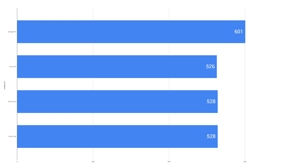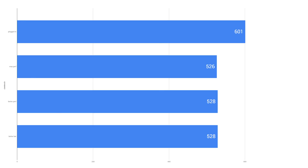In Cinebench, plugged in versus battery has a fairly decent difference, but between all the different battery slider levels, there's not really much of a difference. And actually, max performance is the worst performing out of all of these. In CPU-Z, the same kind of story — plugged in gives you the absolute best performance, but when you're on battery, the slider doesn't seem to really be doing all that much.